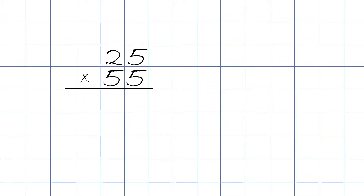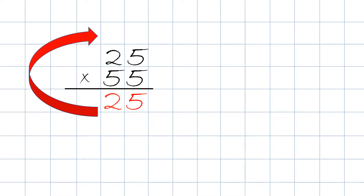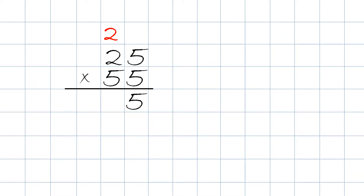Now we have 25 times 55. We take 5 times 5 and the answer will be 25. We do not write 25 — we only write the second digit which is 5, and the 2 we carry to the top over this digit. Next we take 5 times 2 plus the carried 2: 5 times 2 is 10, plus 2 will be 12, and we put 12 right up here.